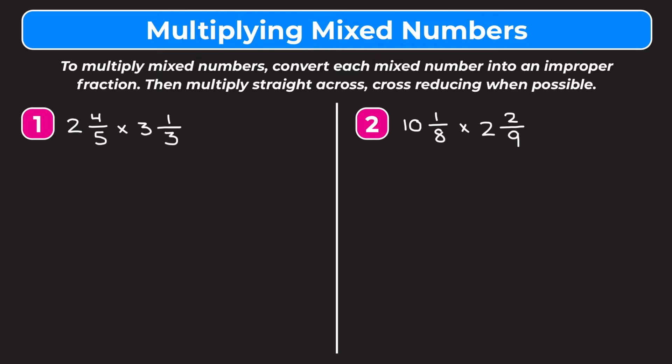Example one is 2 and 4 fifths times 3 and 1 third. We're going to start by changing the mixed numbers into improper fractions. To change a mixed number into an improper fraction we multiply the denominator by the whole number. For 2 and 4 fifths we multiply 2 by 5 which is 10, and add that to the numerator. So 10 plus 4 is 14 — that is our new numerator and our denominator stays the same. So 2 and 4 fifths is the same as 14 fifths.